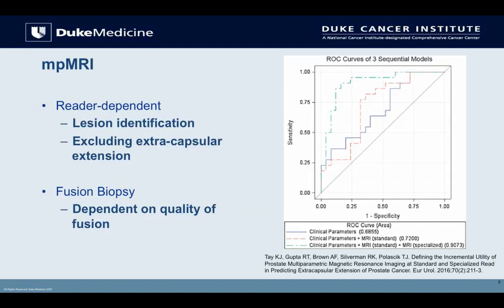At Duke, we did a study — and Scott Egnor made some comments this morning about extracapsular extension. The purpose was to look at extracapsular extension for preoperative planning, whether for nerve-sparing surgery or focal therapy. The ROC curves show that clinical tables like the PART tables give a baseline prediction. Adding standard multiparametric MRI read by a radiologist gave a modest improvement. But when we had a really experienced reader who looked for these things with interest, we pushed the ROC curve above 0.91. Fusion biopsy depends on quality of the reader, the fusion process, and patient factors.